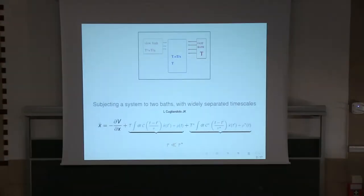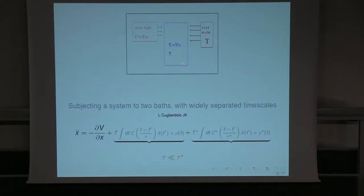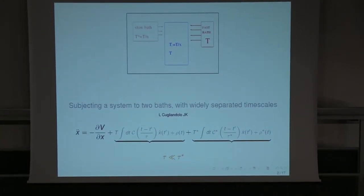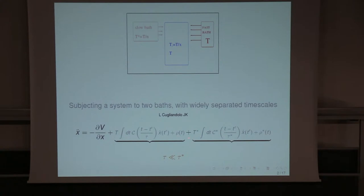What we're going to consider is that we have a system and we are going to couple it to a multi-bath. So what is a multi-bath? This is one bath term, this is another bath term — there is a friction term and a noise term which is correlated, and the relation between the correlation and the friction defines the temperature of the bath.